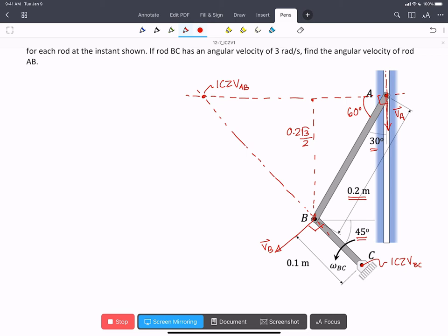Because this angle is 45, this angle will also be 45 degrees. Given that this one's 90, this one will be 45 degrees too. As a result, this length and this length are the same. 0.2 root 3 over 2.